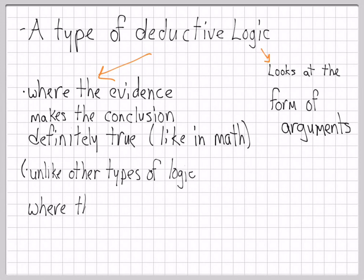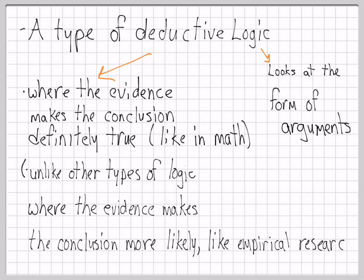Another type of argument that's not deductive are inductive arguments. Inductive arguments make the conclusion more likely true, but not definitely true. This is generally the case in science.